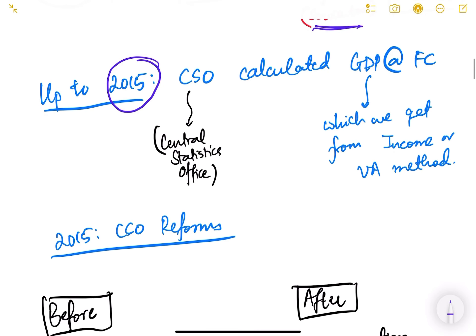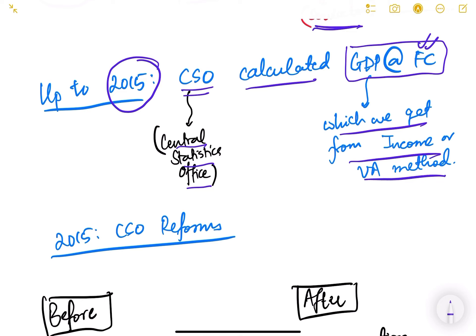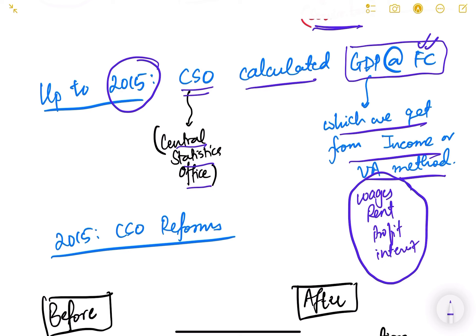Up to 2015, the CSO — Central Statistics Office — calculated the GDP at factor cost. Factor cost basically comes from the income or value-added method, meaning whatever wages, rent, profit, and interest are earned by the factors of production. We sum them all and get the total income earned by the different factors of production in the economy. Whatever we get is at factor cost, not at market price. So up to 2015, GDP at factor cost was our benchmark.